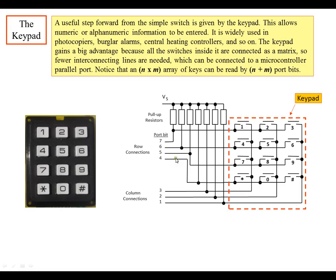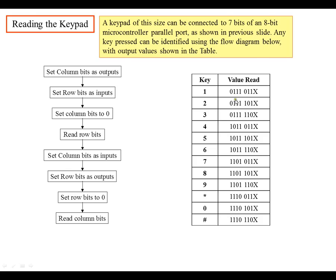On the PIC 16F84A, the keypad would probably be connected to port B because you're going to need seven bits. Each switch is associated with both a row and a column, and there's a pull-up resistor on each line. When you press a button, it grounds that line. For example, pressing '1' pulls pins seven and three low. You can decode that using the matrix table — when bits seven and three are zero, you know a '1' has been pressed. You can go through that matrix and tell exactly which key has been pressed. For more information, read chapter 8 of the textbook, and there's example code available on the website.